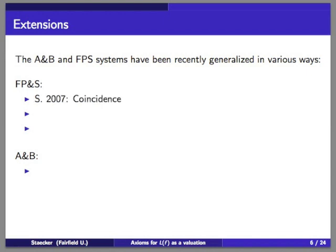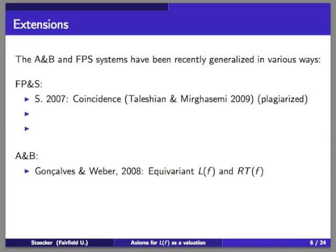These two systems have been generalized in various ways recently. The Furi-Pera-Spadini approach I generalized to the coincidence index in 2007. There is a funny story: Taleshan and Mirgasemi in 2009 published the same proof — and by the same proof I mean the same proof. They found my paper, put their names on it, and published it in another journal. We published in Topology and Applications and demanded the other journal retract the article; it is still on their web page.